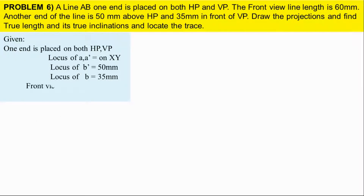Given data: front view line length. The front view line name is A-dash B-dash. Now we will mark the point B.